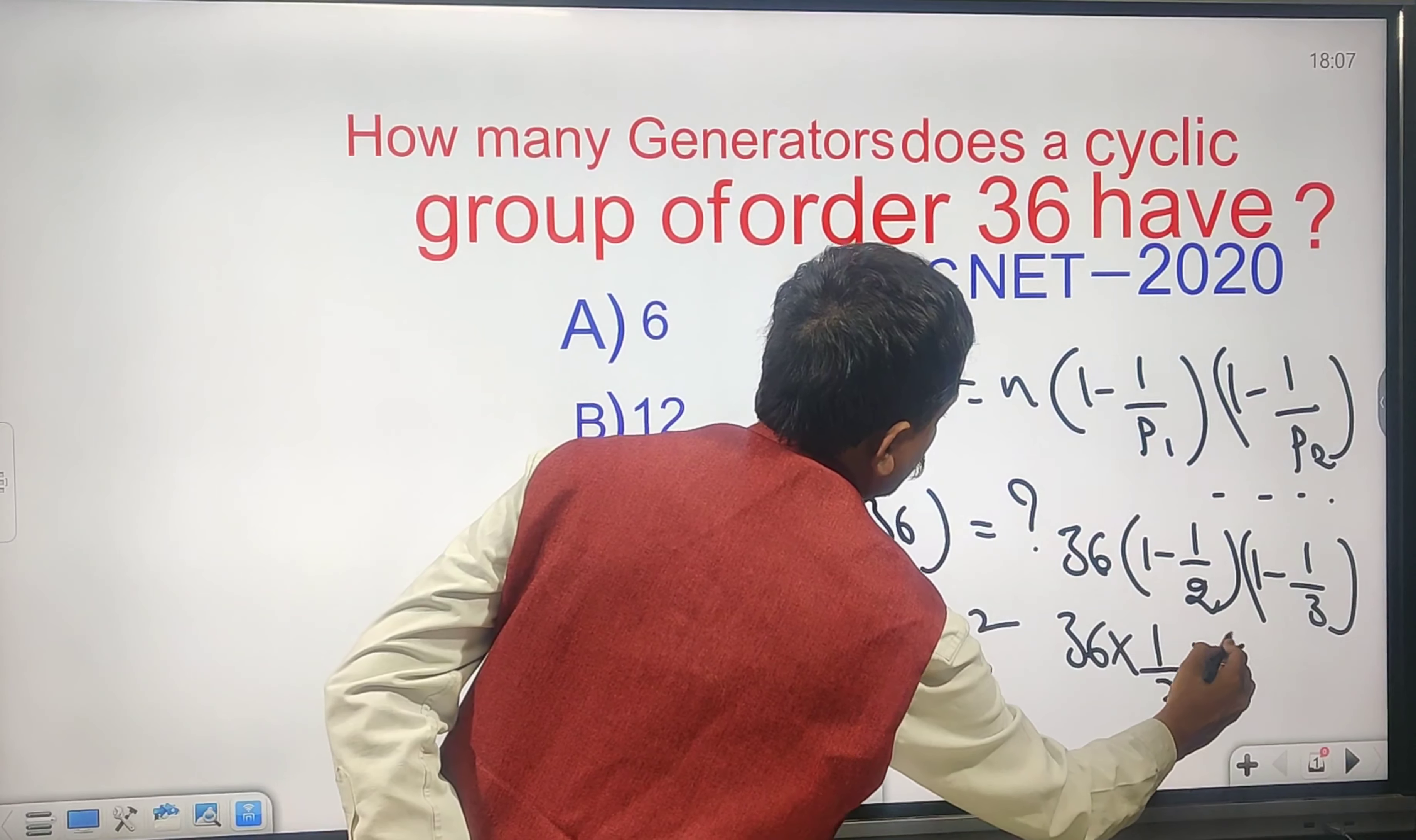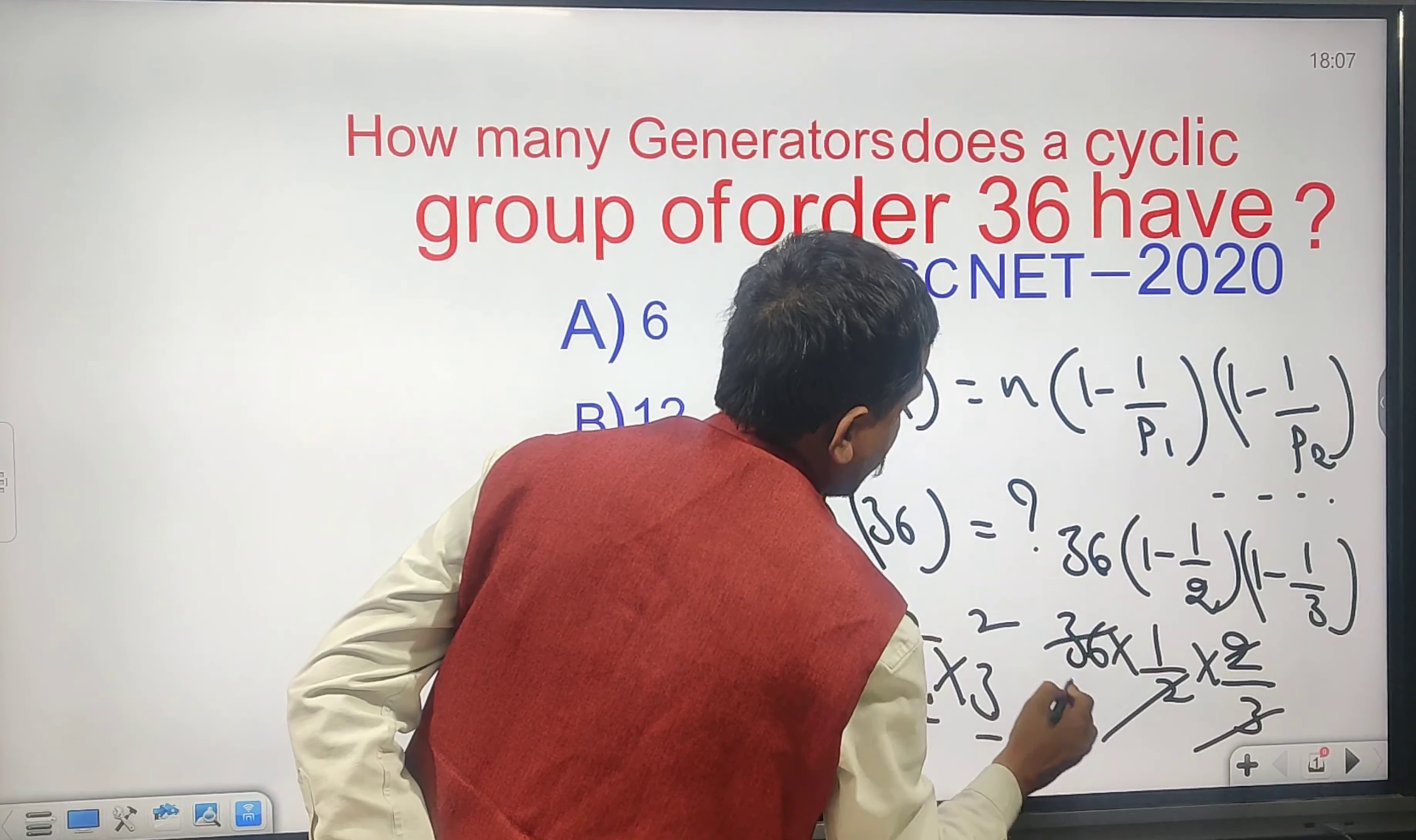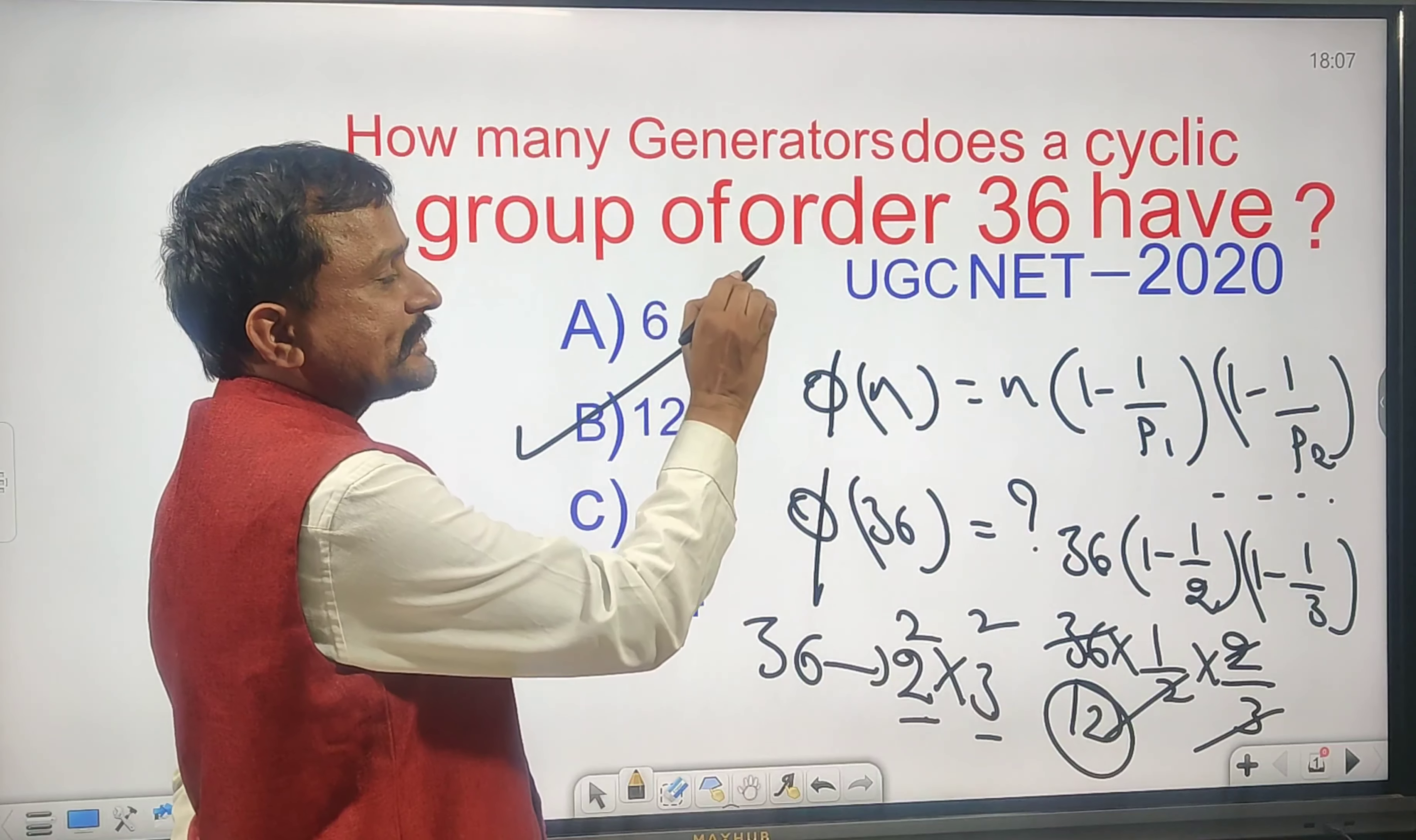2 cancels with 12, the 36... the answer equals 12.